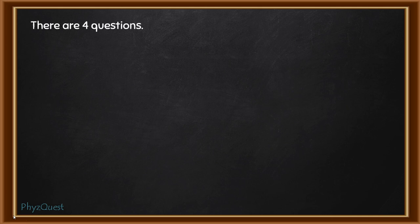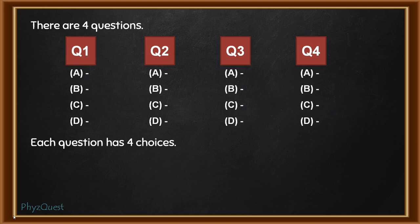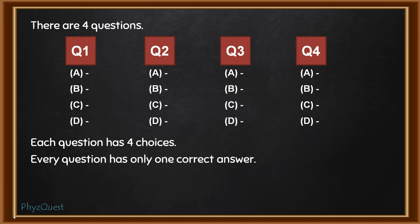First of all, there are 4 questions. Let us suppose question 1, 2, 3, and 4. And each question has 4 choices. Let us suppose they have choices A, B, C, and D. Every question has only one correct answer, so out of the 4 options, only one of the options is correct.